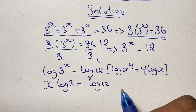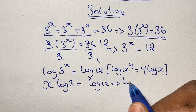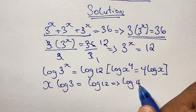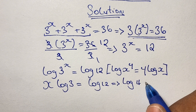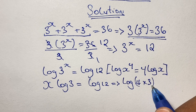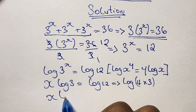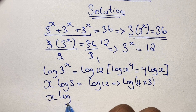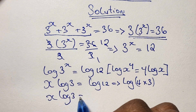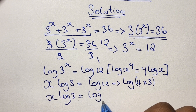Now we can simplify log of 12 by finding two factors of 12. In this case we choose 4 and 3, so we have log of 4 times 3. We'll be using this expression as we go along, so that gives us x·log 3 is equal to log of (4 times 3).